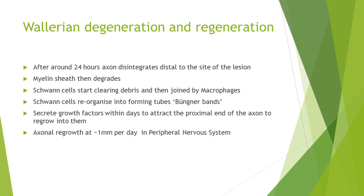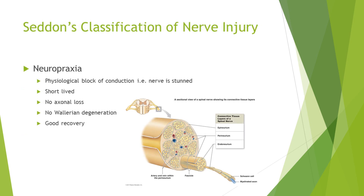Axonal regrowth occurs at approximately a millimetre a day, starting from around day four in the peripheral nervous system. There are lots of different classifications of nerve injuries, but Seddon's is quite useful for our purposes. The first type of injury is neuropraxia — a physiological block of conduction where the nerve is effectively stunned. It is relatively short-lived, lasting a number of weeks or months. There is no axonal loss involved, and because there's no axonal loss there's no Wallerian degeneration, and therefore on the EMG you're not going to be picking up those signs. There will be a good recovery because the nerve is only physiologically stunned.